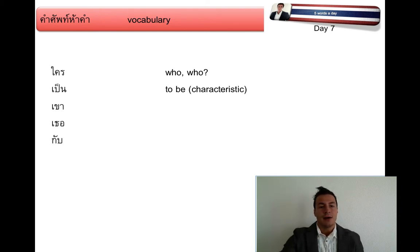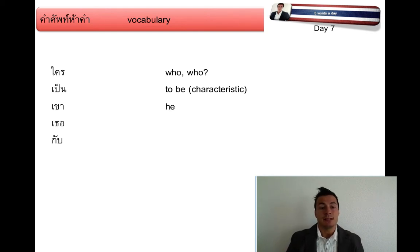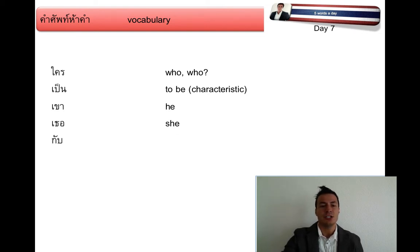เขา means 'he', or whatever form — him, his, whatever. เธอ accordingly means 'she', her, or whatever form of she. Then กับ means 'with' or 'and'.